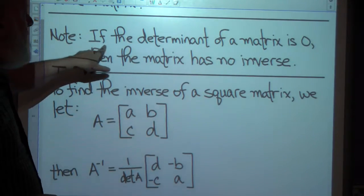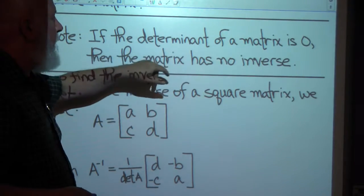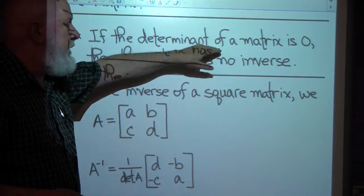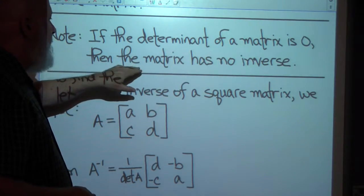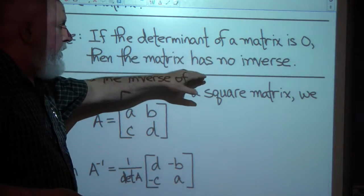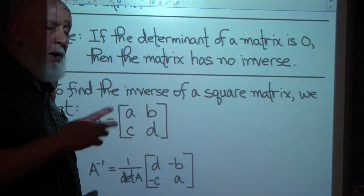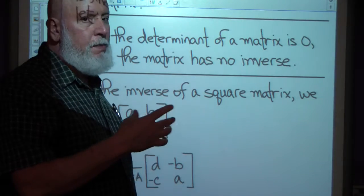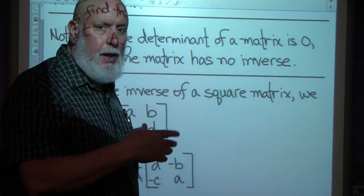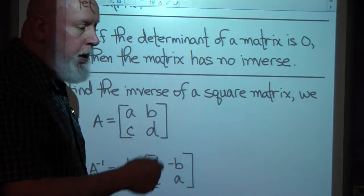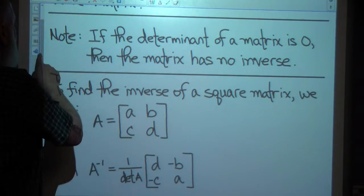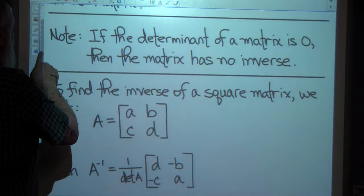Note: if the determinant of a matrix is 0, then the matrix has no inverse. We're going to use the inverse of a matrix to solve matrix equations later, and what we're going to do now is figure out how to find the inverse of a matrix.